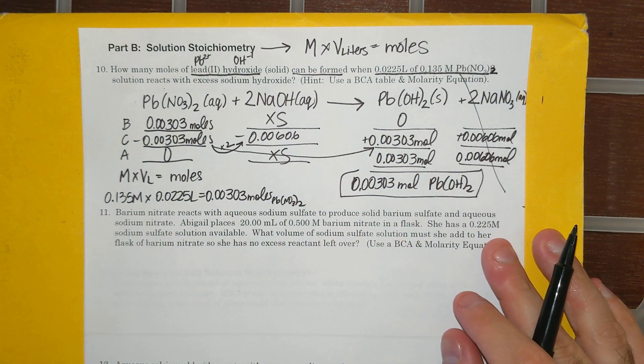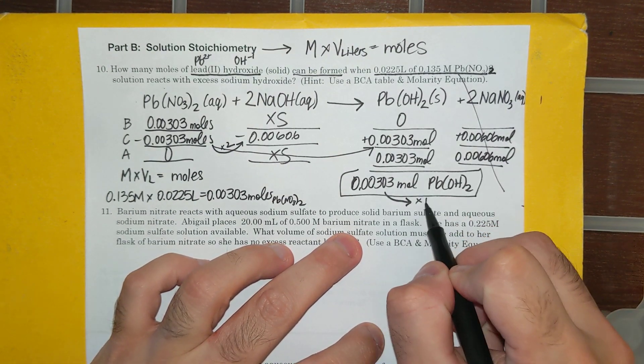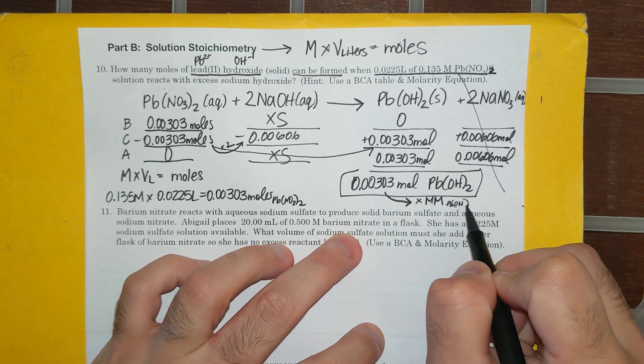And then, of course, if the question asks for grams, I would take these moles, just like we've been doing, and multiply it times the molar mass of Pb(OH)2.